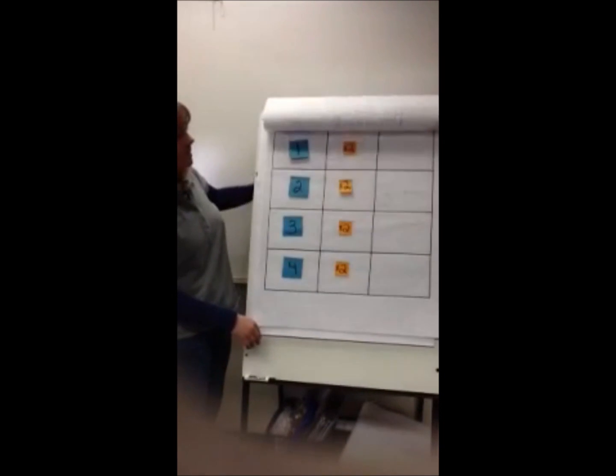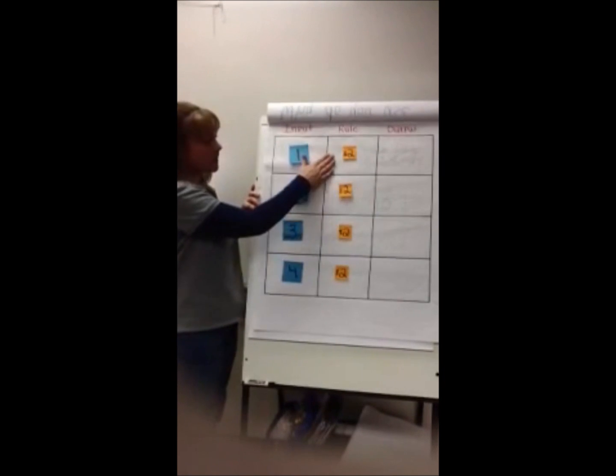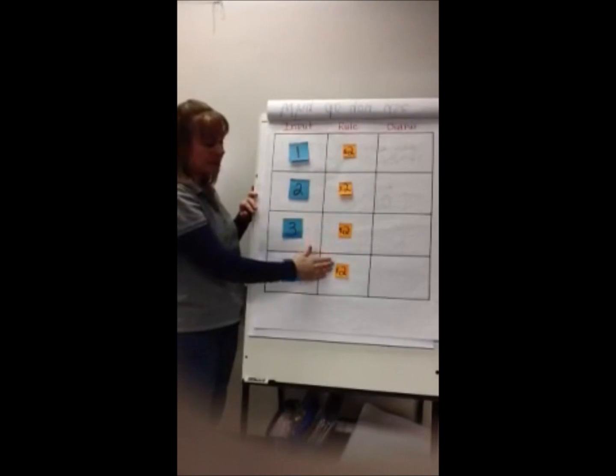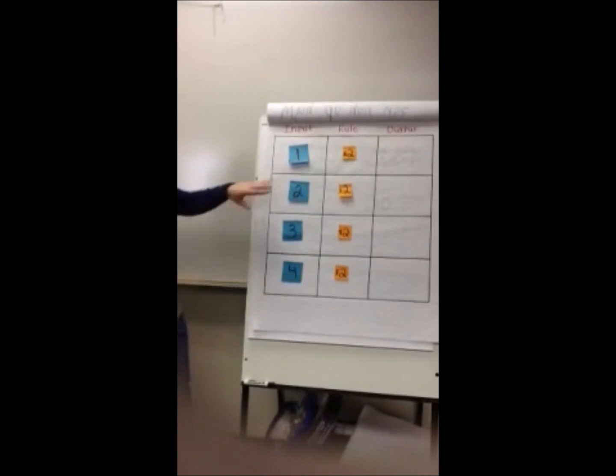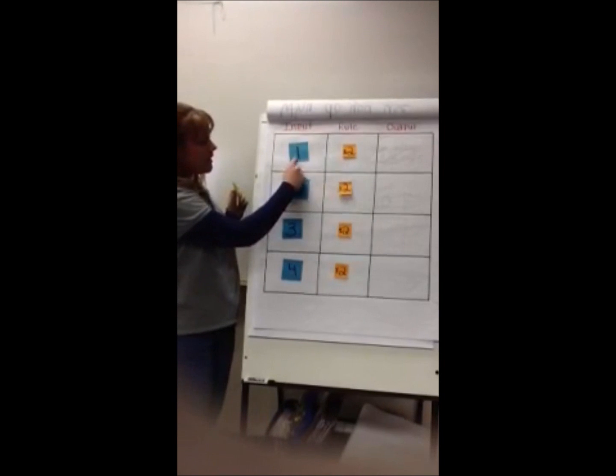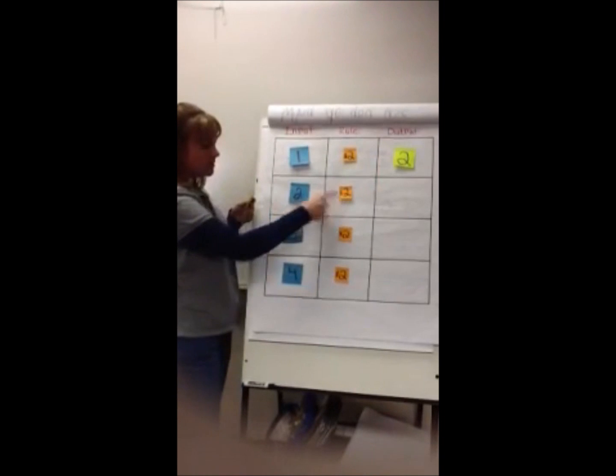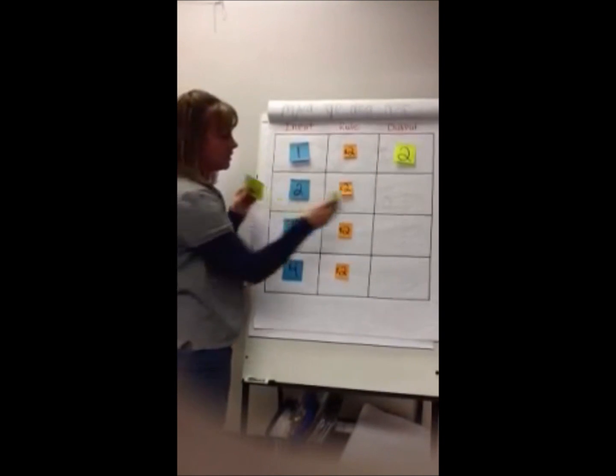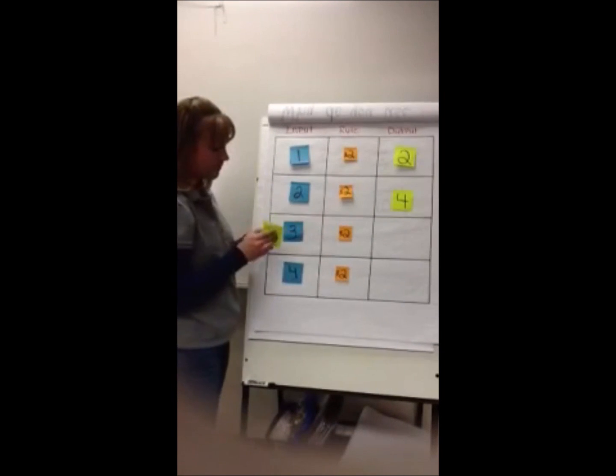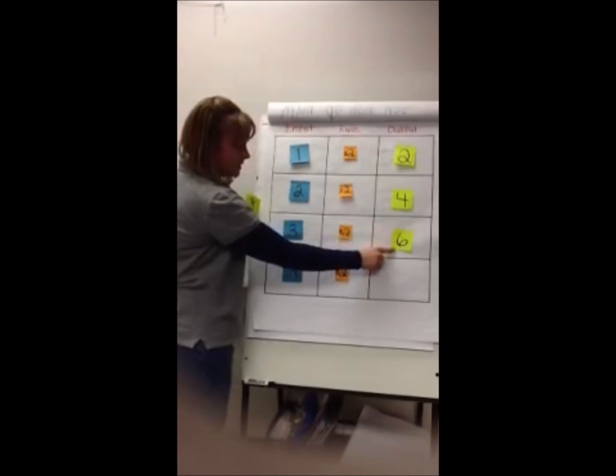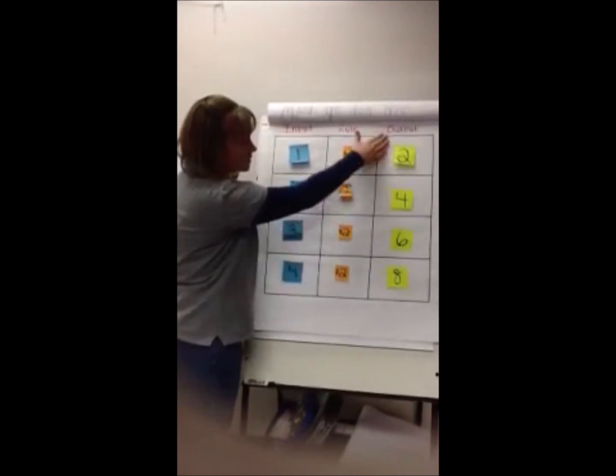Now we're going to do some examples. Here's our input, our rule, and our output. The rule will always stay the same in the same table. This will never change. So we're going to do times 2. So we have 1 times 2 is 2, 2 times 2 is 4, 3 times 2 is 6, and 4 times 2 is 8. So here's our output.